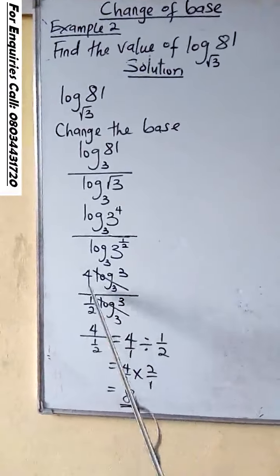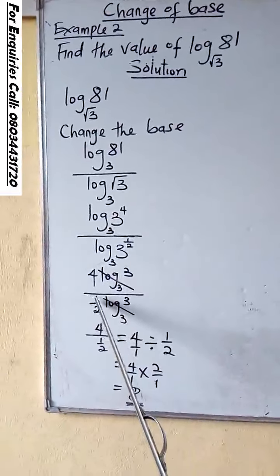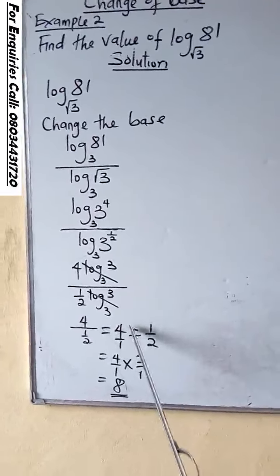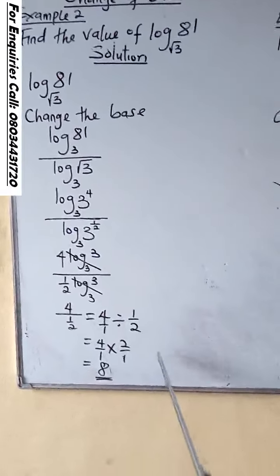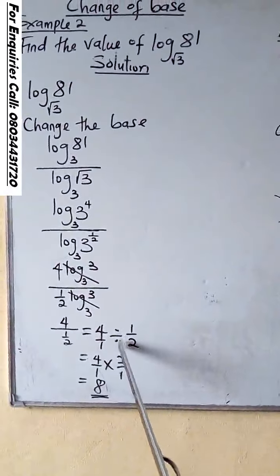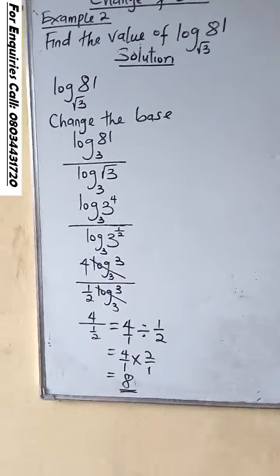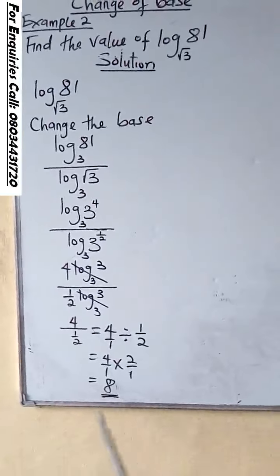It will leave us with 4 over 1/2, which is 4 divided by 1/2. If you change this division sign to multiplication, you will turn 1/2 to 2/1. So our answer will be 8.